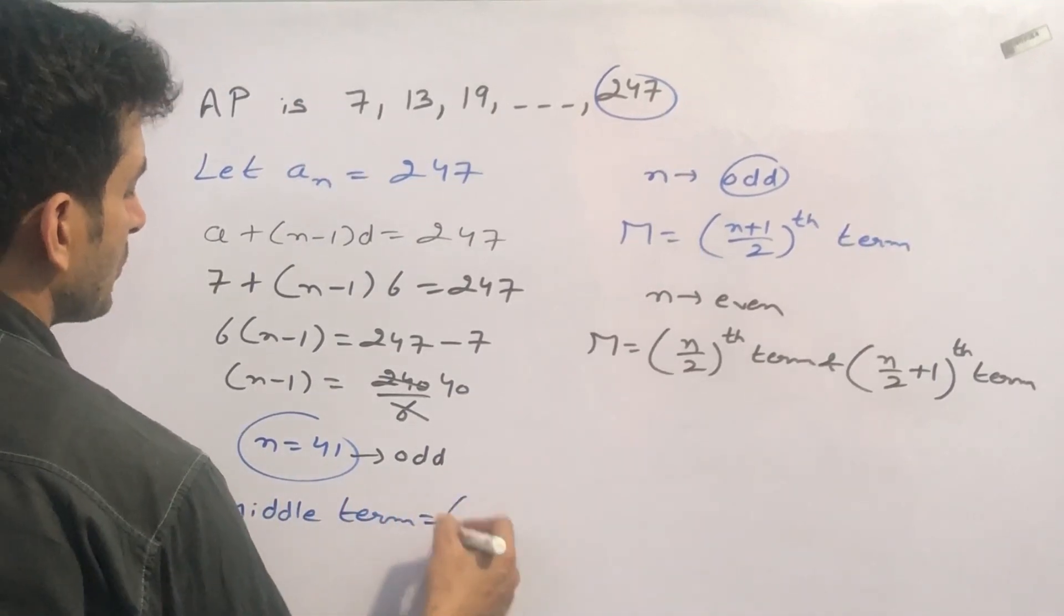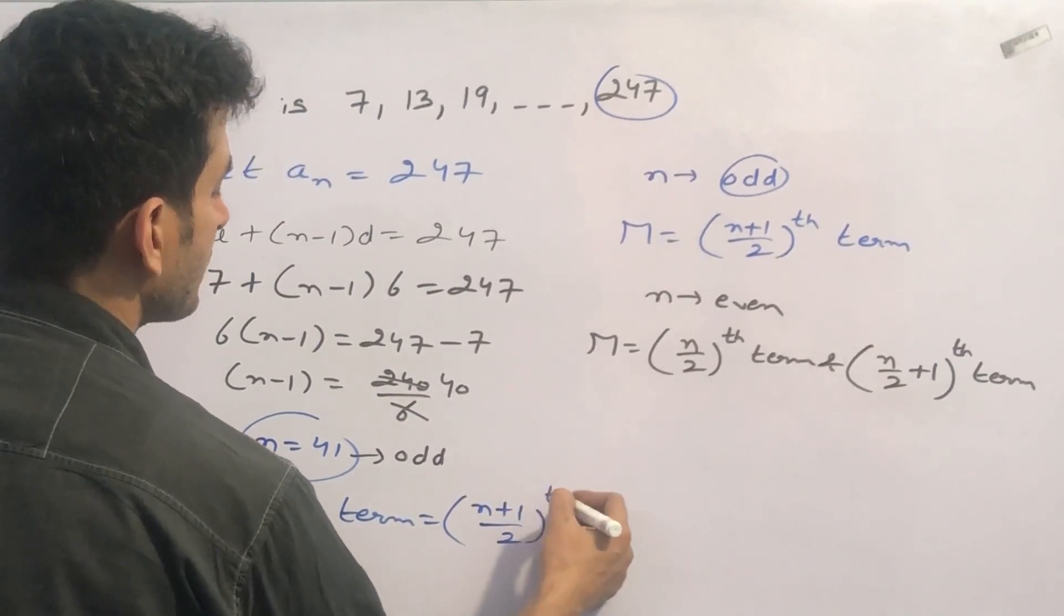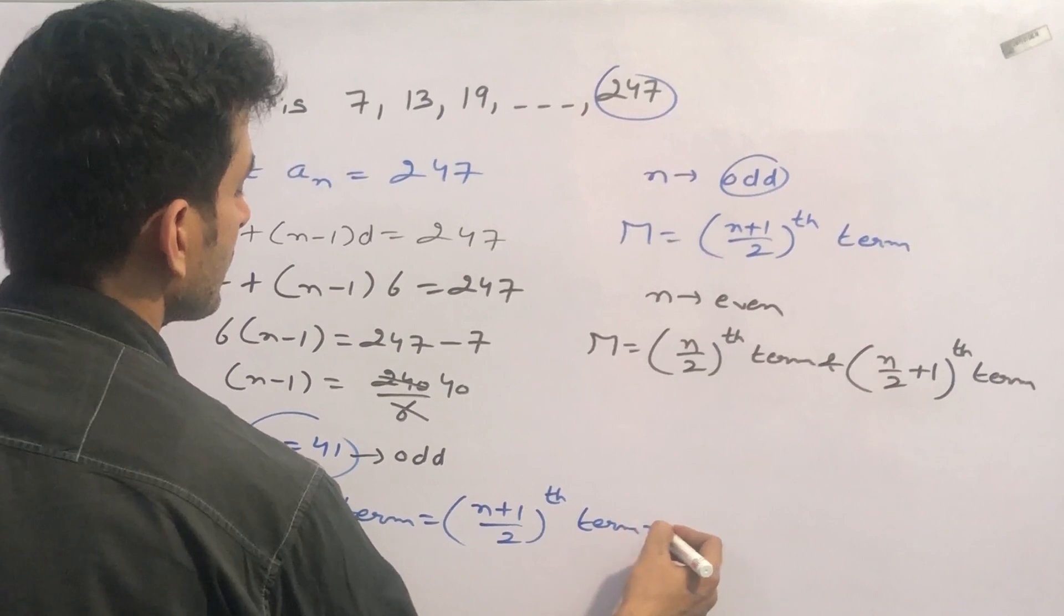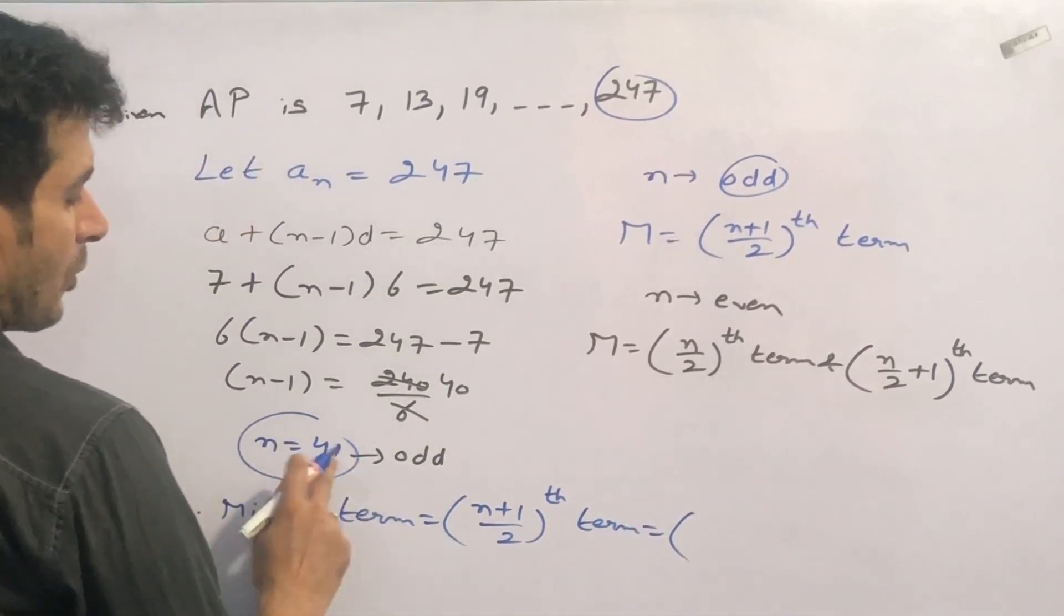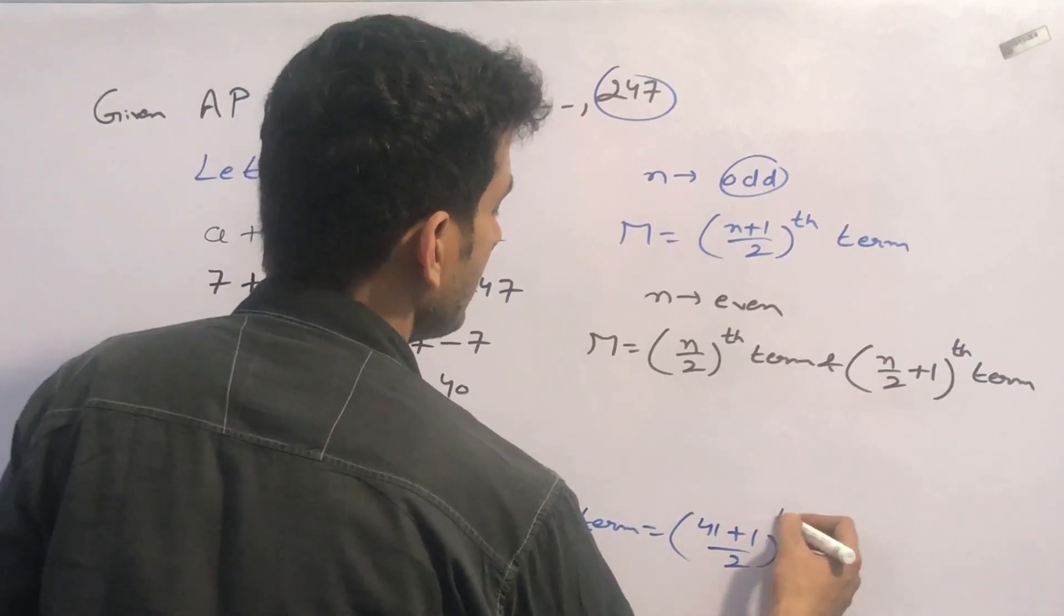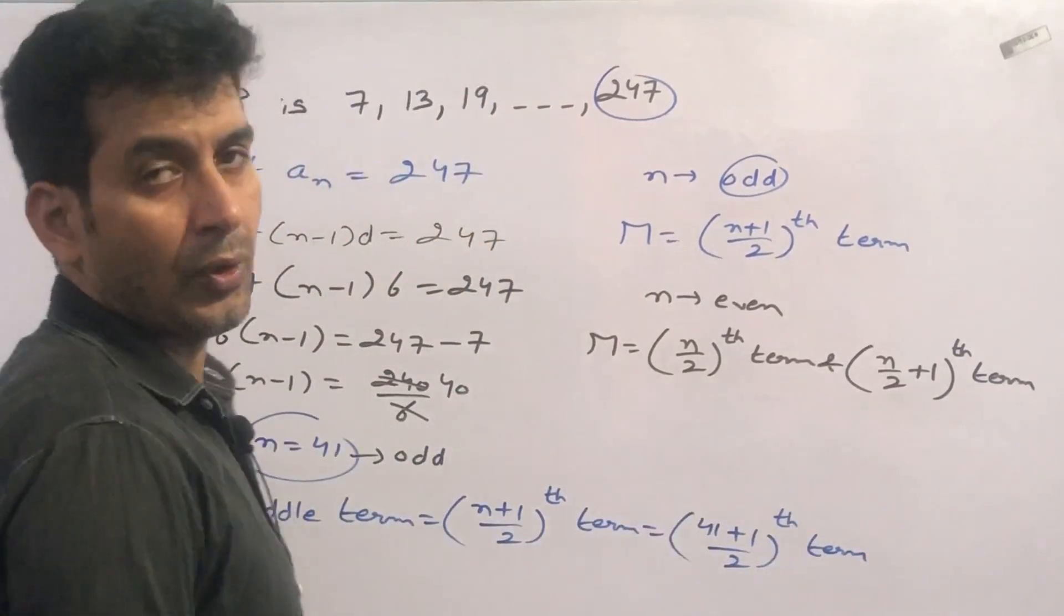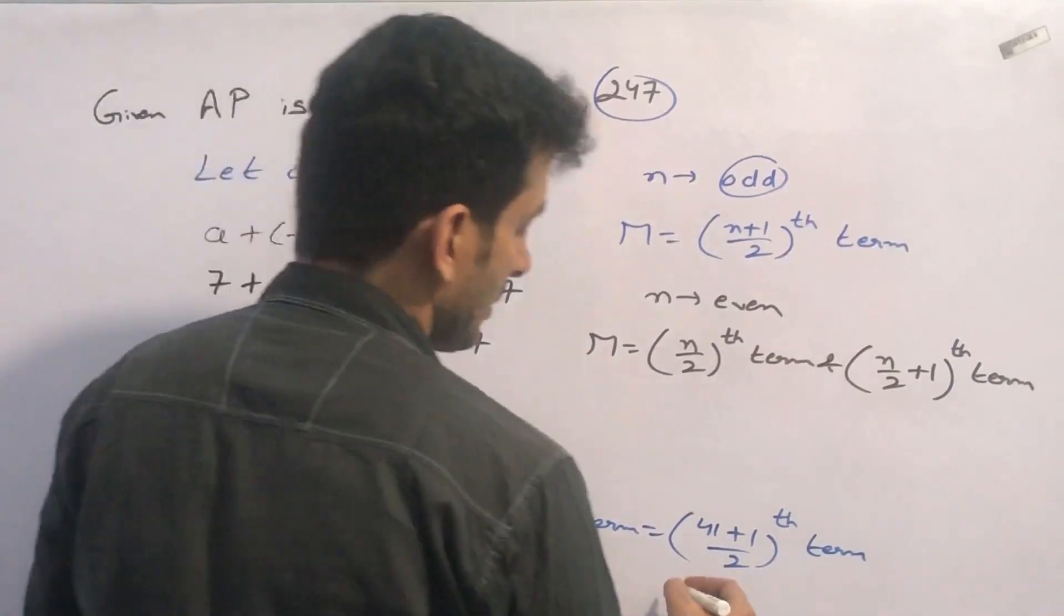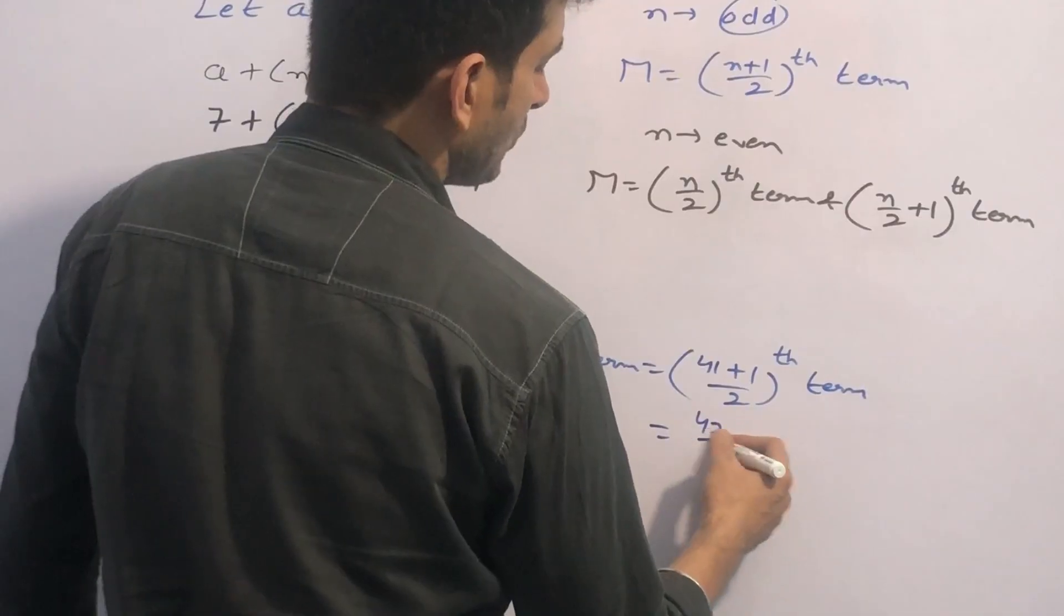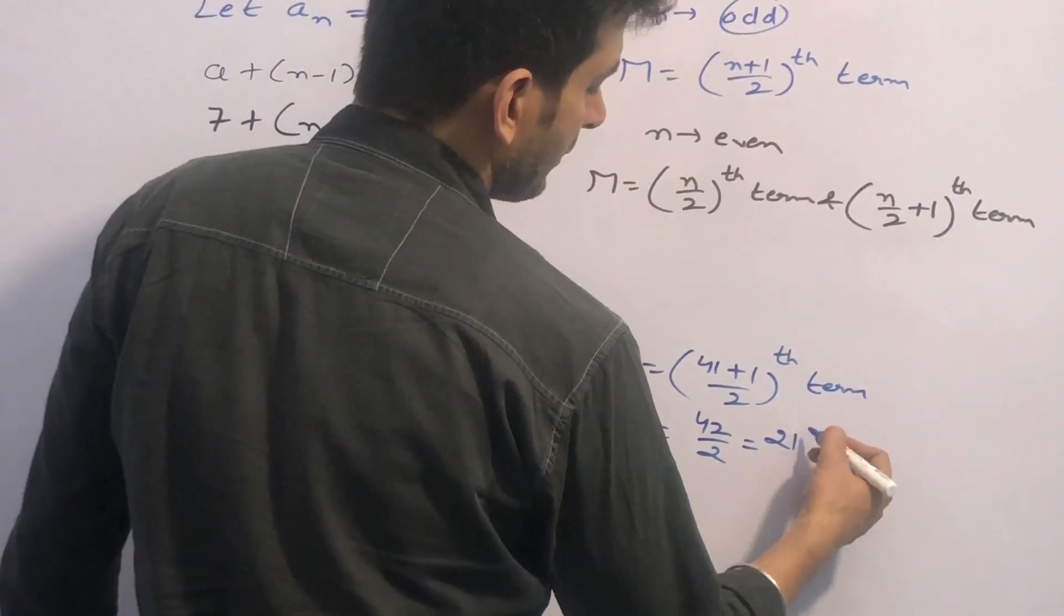Therefore, middle term will be equal to N plus 1 by 2 th term. Value of N is 41 plus 1 by 2 th term. 41 plus 1 is 42. 42 by 2, which is equal to 21st term.